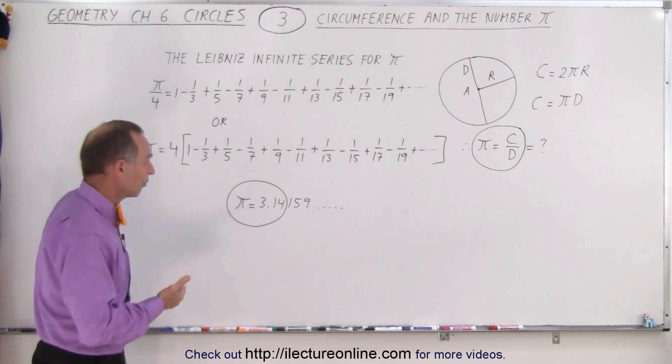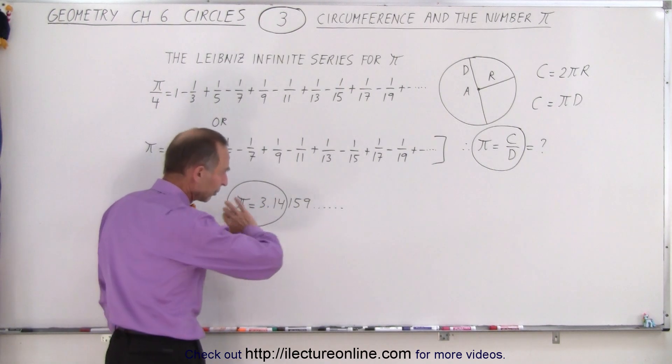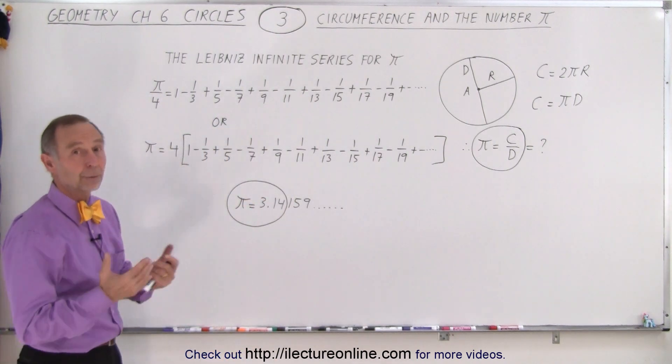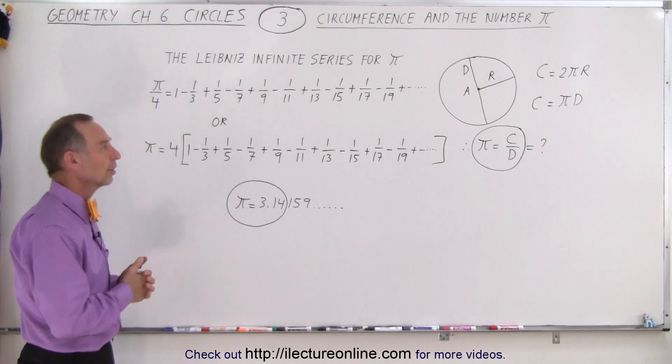But for most of us, it's sufficient to simply say that π is approximately equal to 3.14. We just drop everything else off, and that's close enough for our purposes. We don't need to be that accurate; we just need to know how to use it.